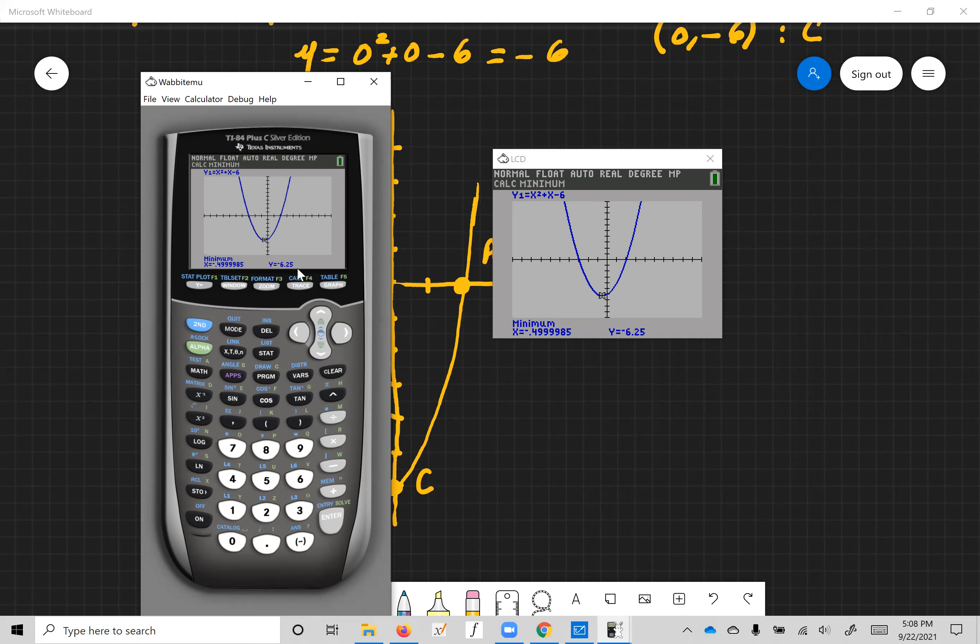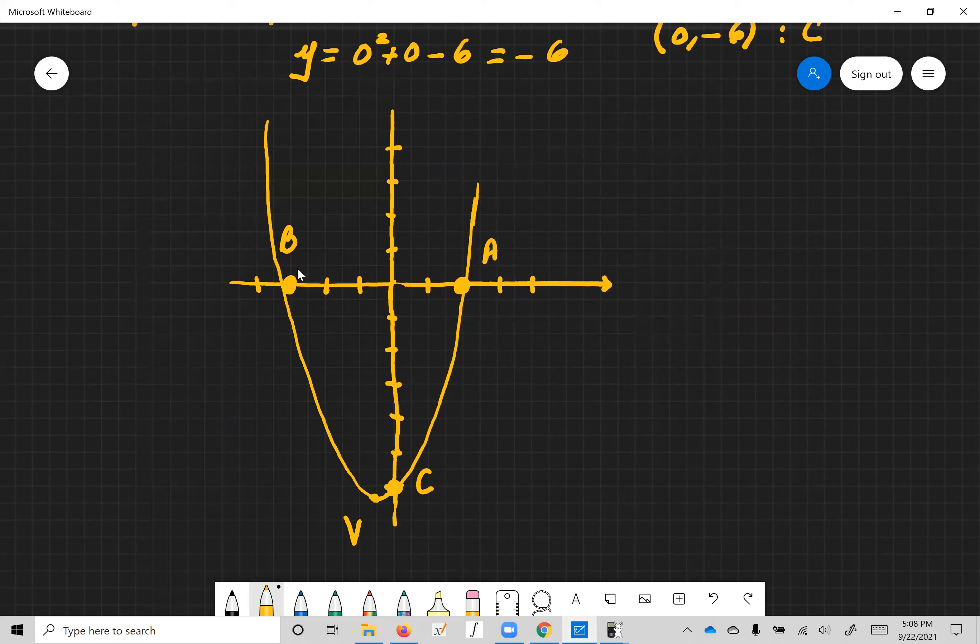So this is analyzing the parabola using just algebra and then graphically verifying that the points that we got, the important points A, B, C, and V, are the same. Okay, thanks. This is it for the video.